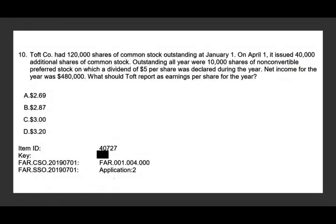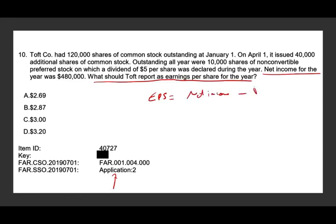This question is application. Application means it's a little bit more involved than remembering and understanding. The question asks: what should be reported as earnings per share (EPS)? The first thing you need is the formula memorized. EPS equals net income minus preferred dividends, if any, divided by the weighted average number of shares outstanding.